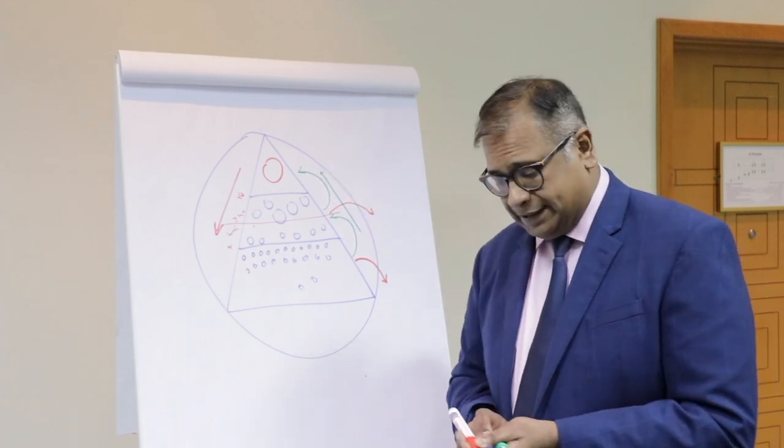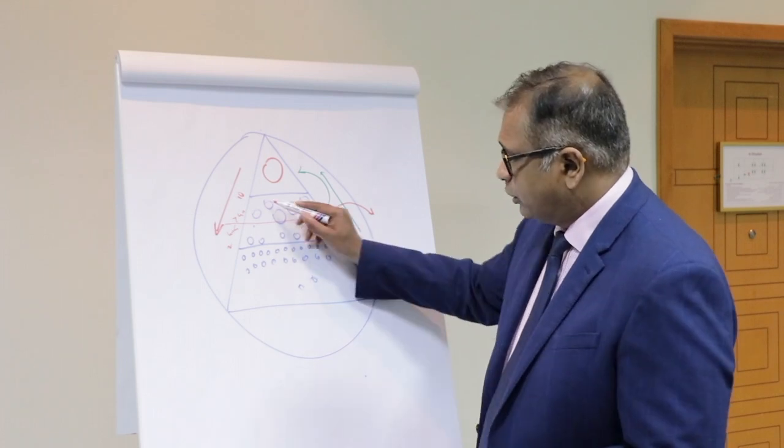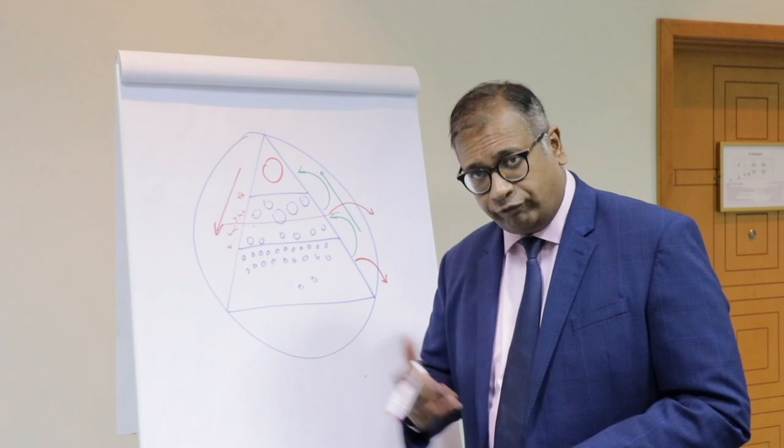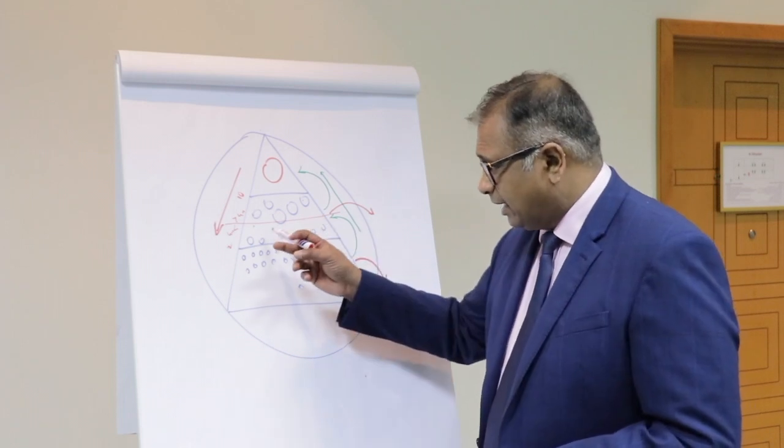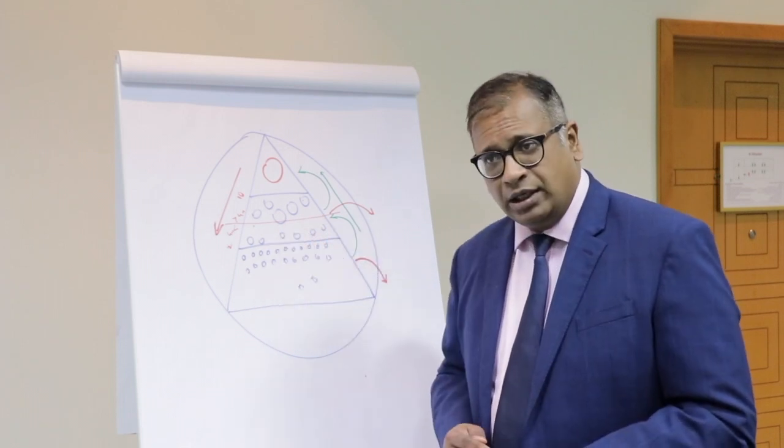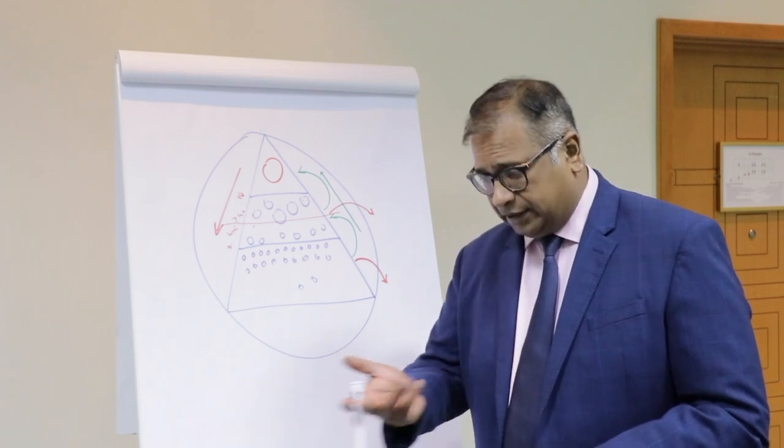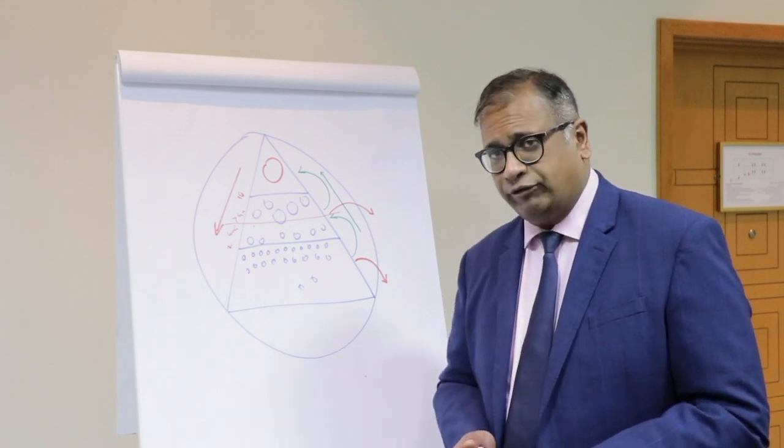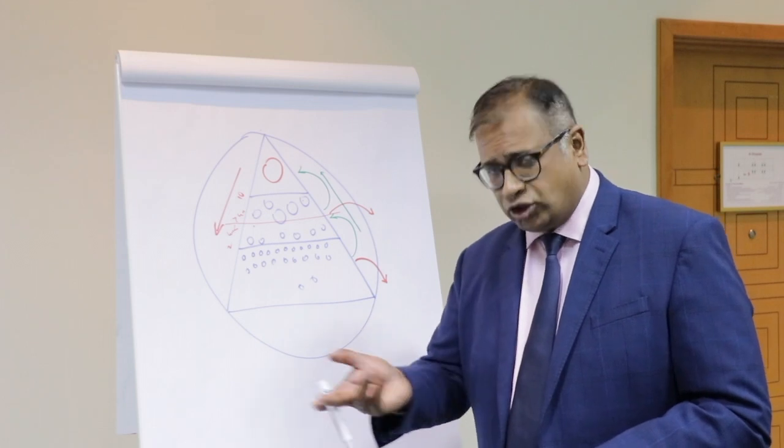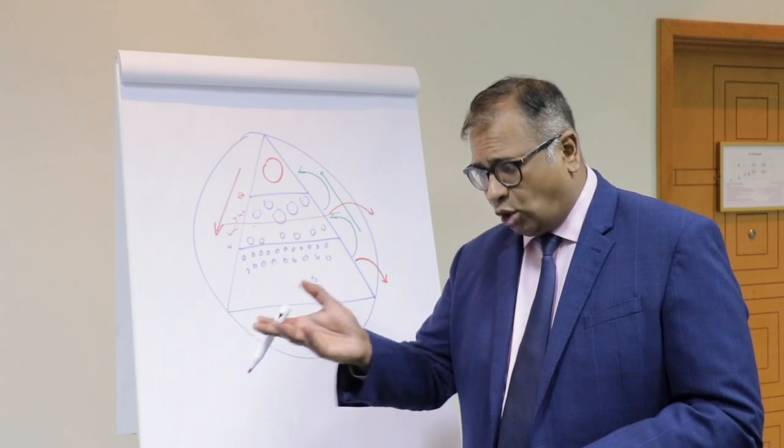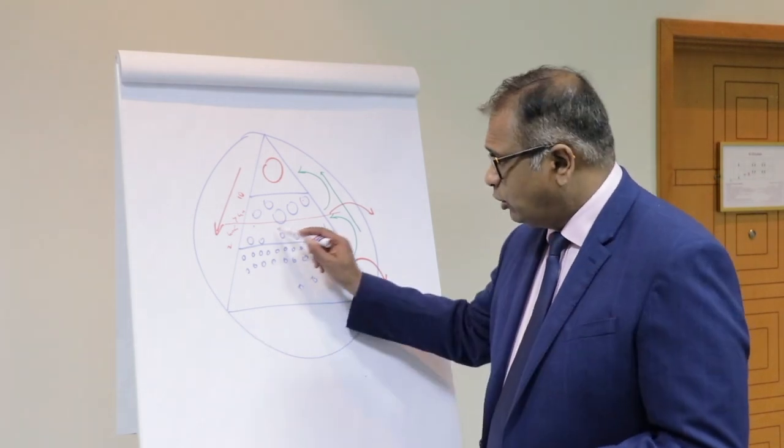Follicles that are closer to the top recruit much better. Follicles that are lower down traditionally are not meant for that cycle. And they are not meant for the follicular phase. In induction of ovulation, they are meant for the mid follicular phase or the luteal phase. So they don't need to grow.